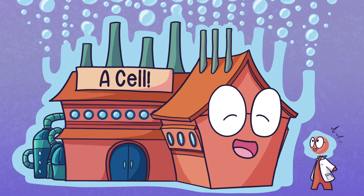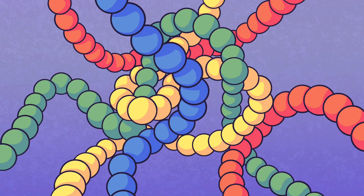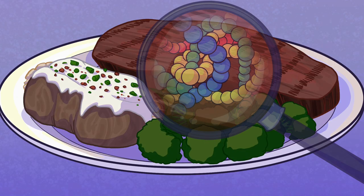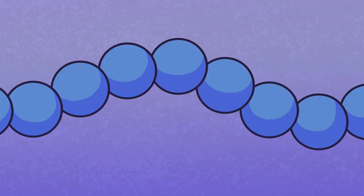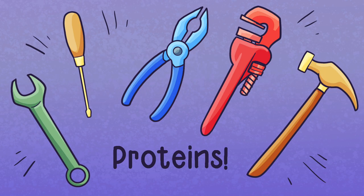Imagine that every cell in our body is like a factory. Like any factory, it needs tools and machinery in order to operate. The tools in our cells are proteins — the same proteins that are in our food. During digestion, proteins are broken down to later be used by our cells to generate tools.